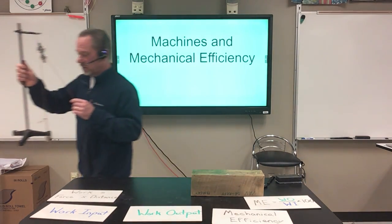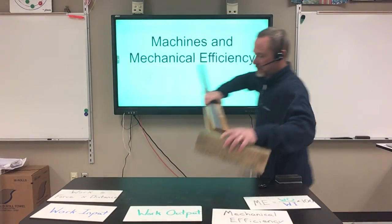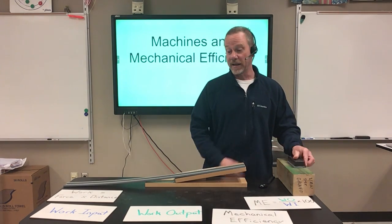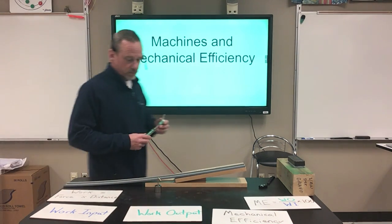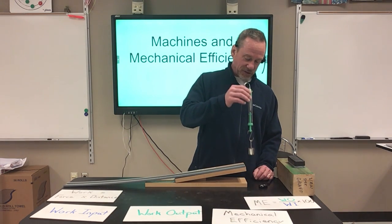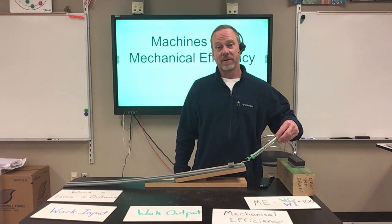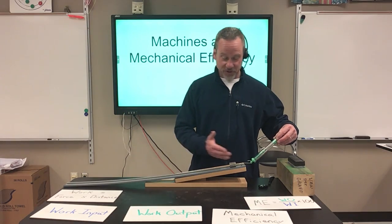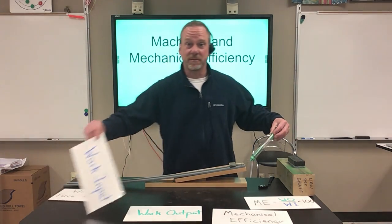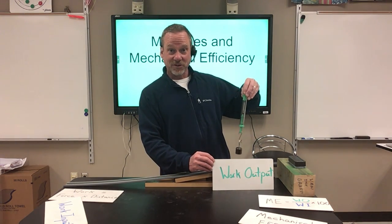One more example of a simple machine — we saw a lever, we saw a pulley. This is a device called an inclined plane. So instead of simply lifting this mass up this distance, I can put it on the inclined plane and slide it up. Work takes place in two places: the force and the distance moving the mass up the plane is my work input, and the work output would be the force and the distance to lift the mass directly.